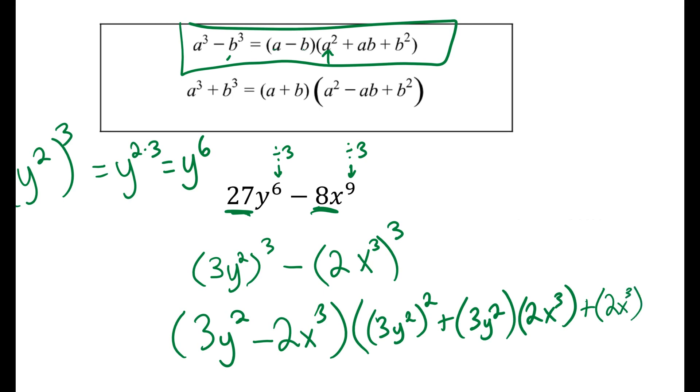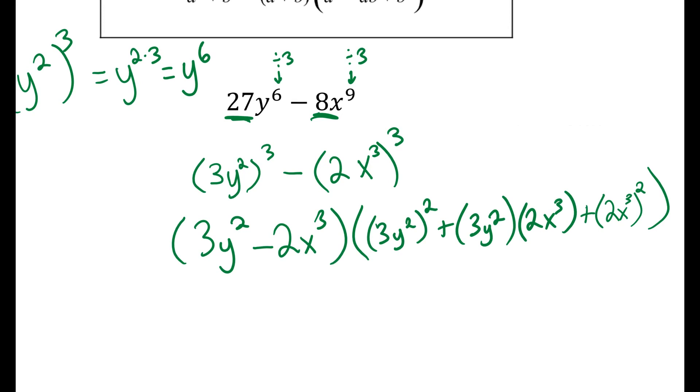These problems can get dense because there's simplifying to do. Look how many sets of parentheses we have here. I'm going to rewrite that first binomial. There's nothing I can simplify there. But looking here, 3 squared is 9, and y² squared is y⁴, because I multiply those exponents. Here I multiply the coefficients 3 and 2 to get 6.